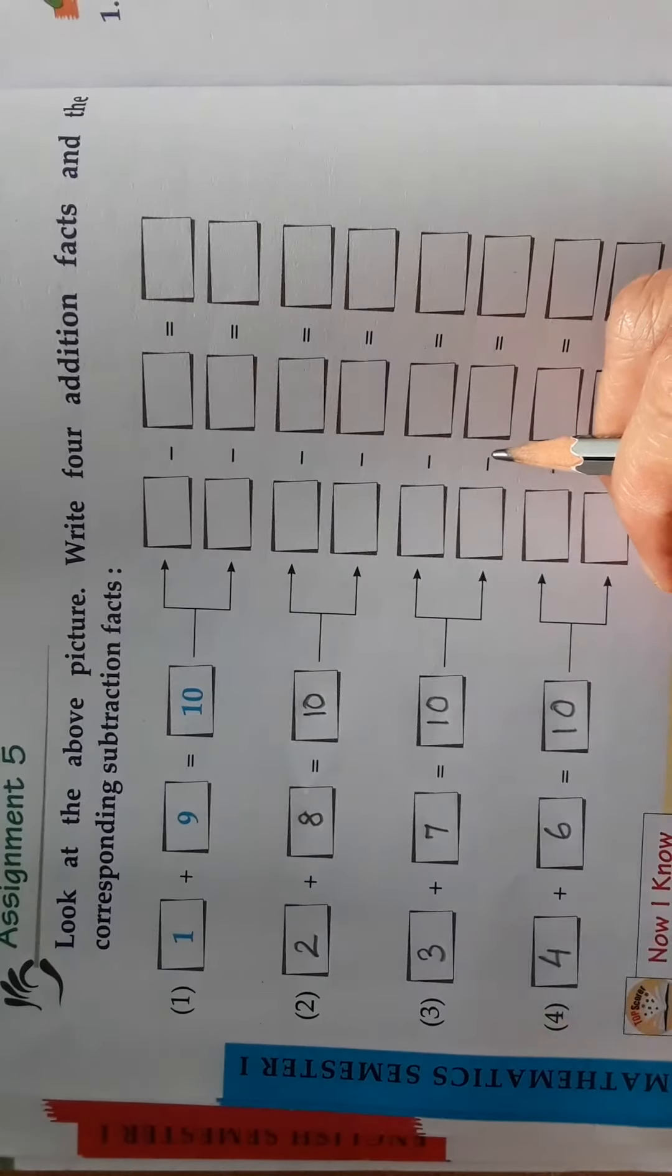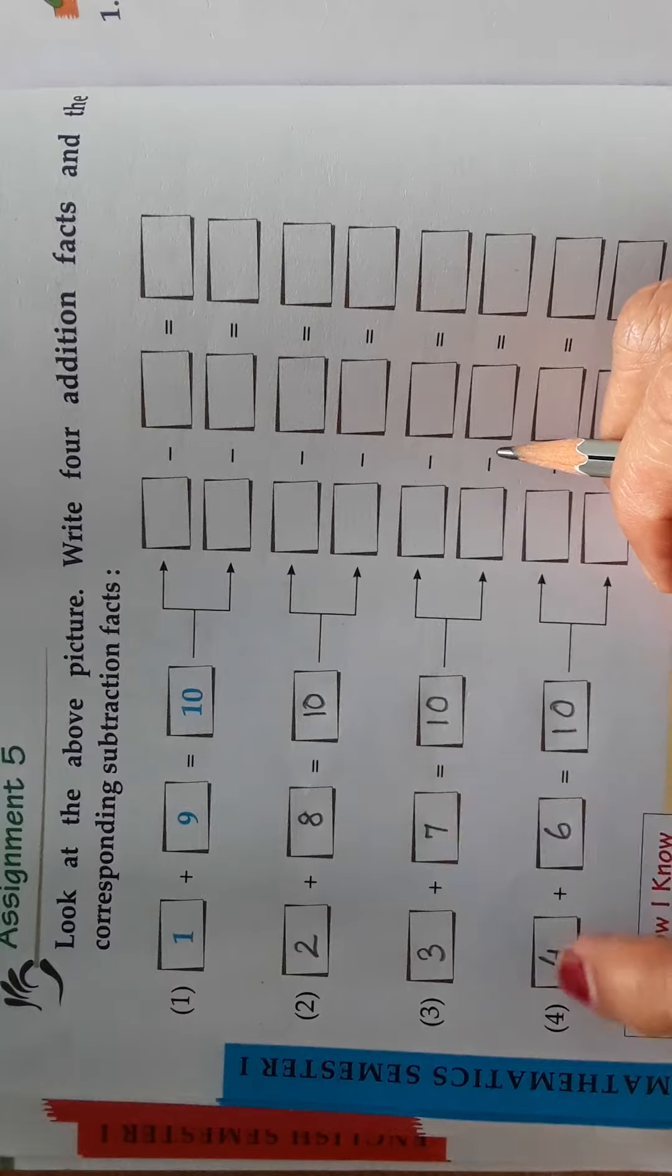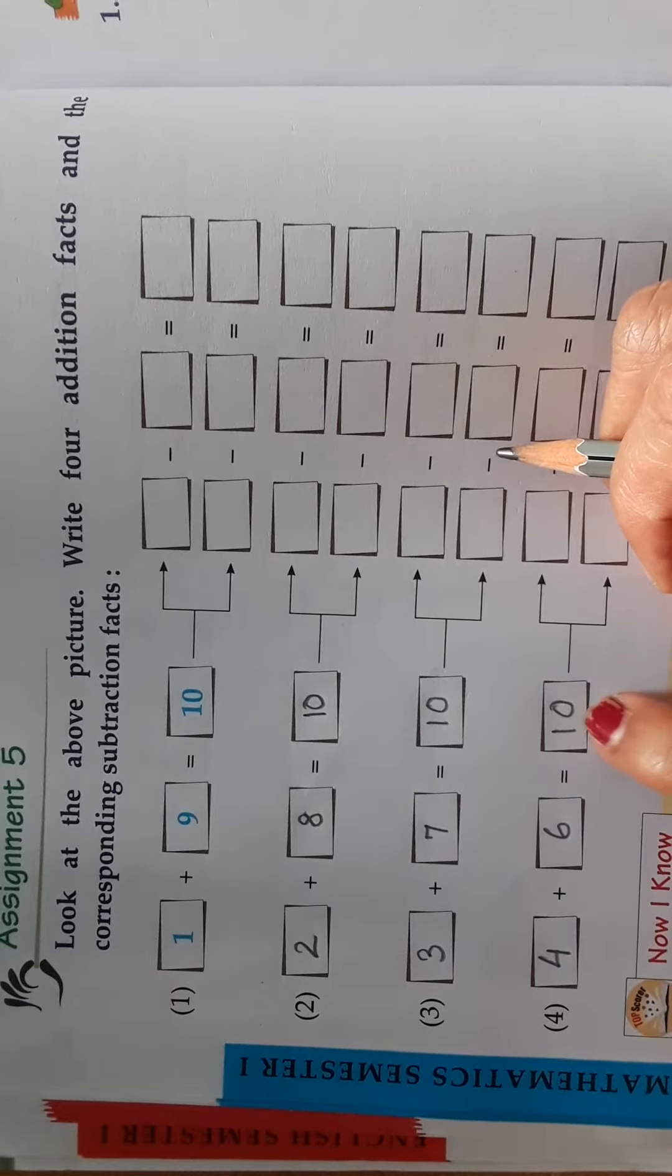Understood? 2 plus 8 is equal to 10. 4 plus 6 is equal to 10.